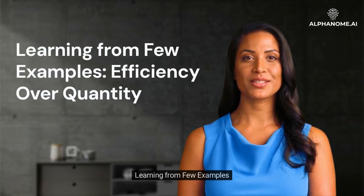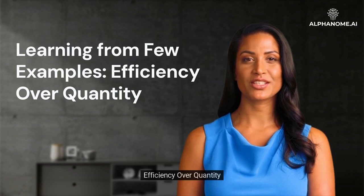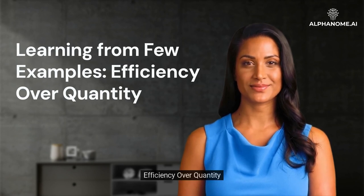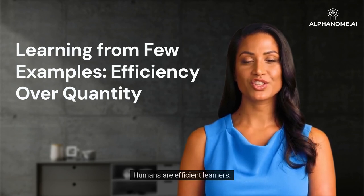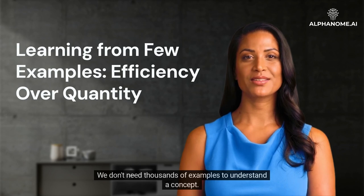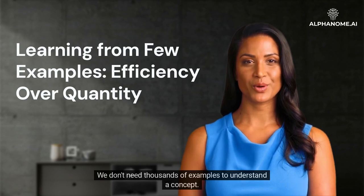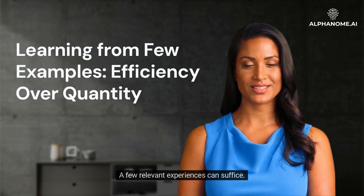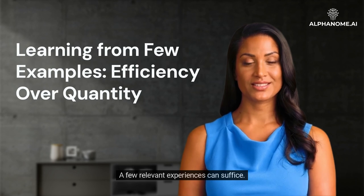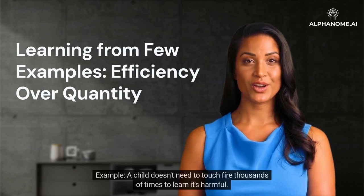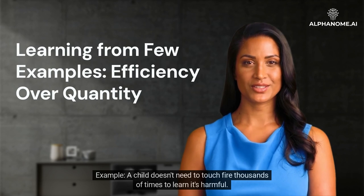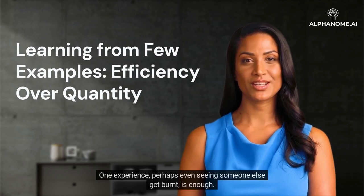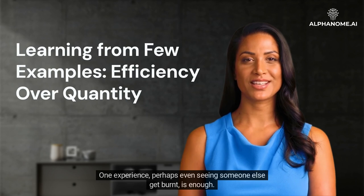Learning from Few Examples: Efficiency over Quantity. Humans are efficient learners — we don't need thousands of examples to understand a concept; a few relevant experiences can suffice. A child doesn't need to touch fire thousands of times to learn it's harmful. One experience, perhaps even seeing someone else get burnt, is enough.